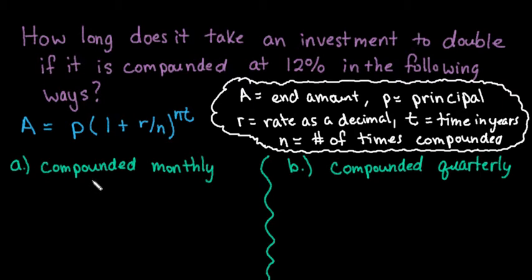For this video, I want to look at the question: how long does it take an investment to double if it is compounded at 12% in the following ways?